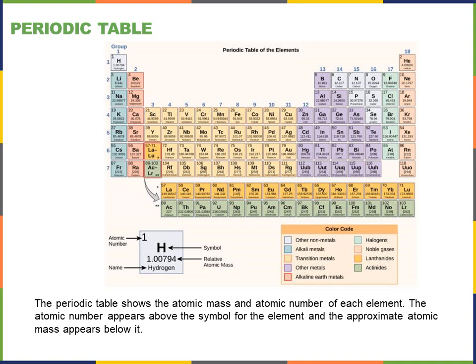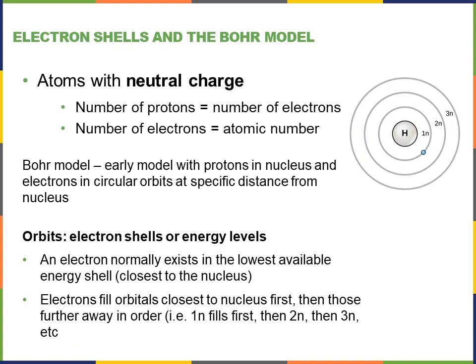As you look at the periodic table, things on the far left are going to be more reactive than things on the right. Over on the far right you have the noble gases that basically don't react with anything. Why? They're happy — they're in balance. Over on the left, not so much; things are out of balance.